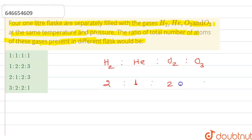So this is the ratio of their molecules. It will be constant. The ratio of the number of gas atoms in four flasks will be equal to the ratio of the number of atoms in each molecule of four gases.